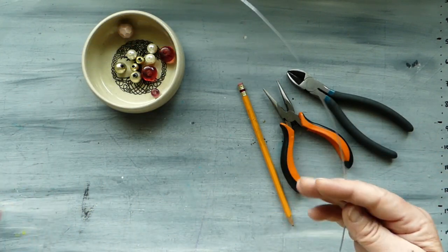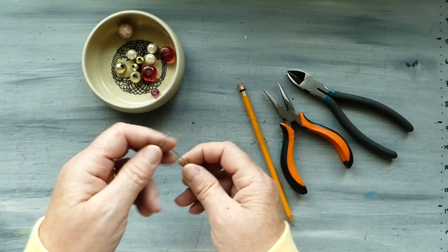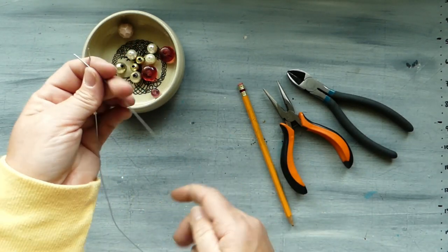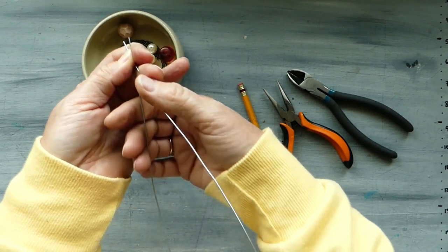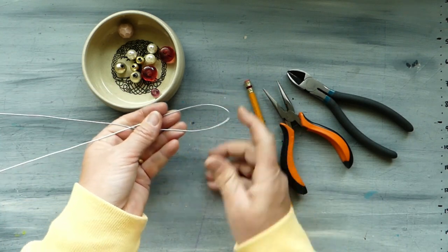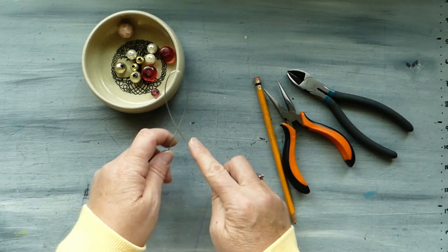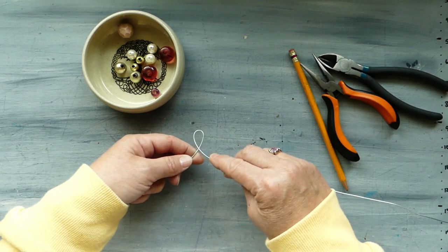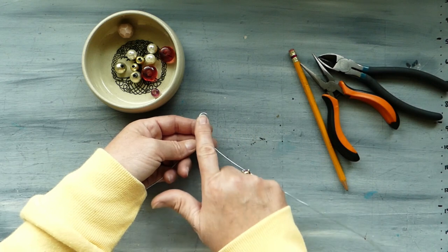To start, we just double up our wire, meet the ends, and then just give it a light squeeze like that so that we've got this loop. We've got wire on either side and we just give this a slight bend. We want this to be fairly large because this is going to keep our beads from slipping off the end.